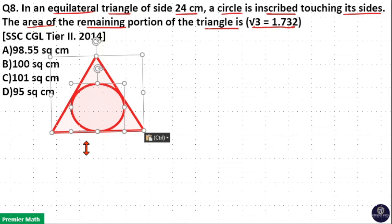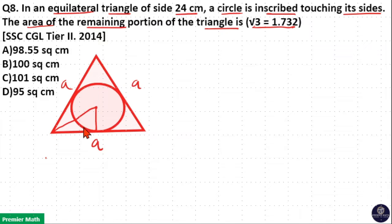Here, equilateral triangle means all three sides of this triangle are equal. Now, a circle is inscribed. The radius of the inscribed circle in an equilateral triangle formula is a/(2√3). Radius of inner circle is a/(2√3). But if you don't know this formula, just find it.